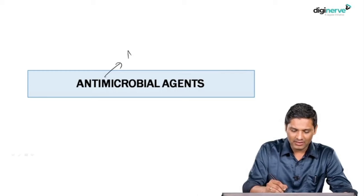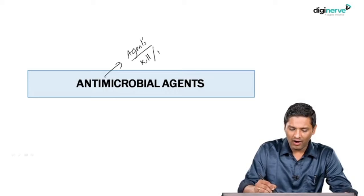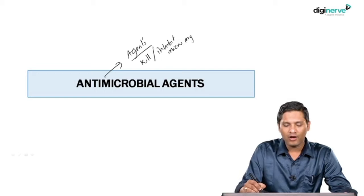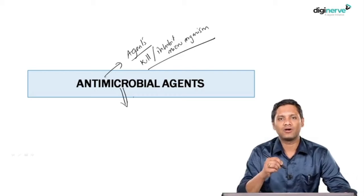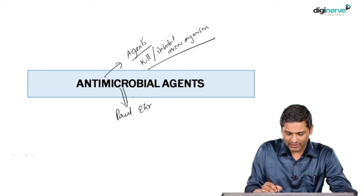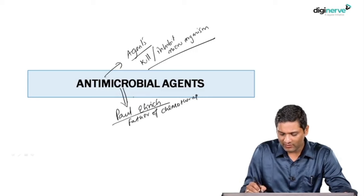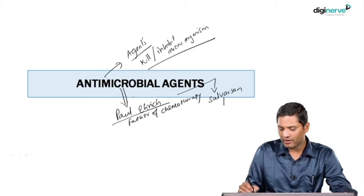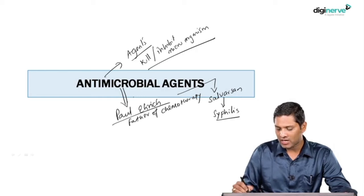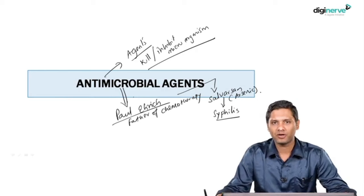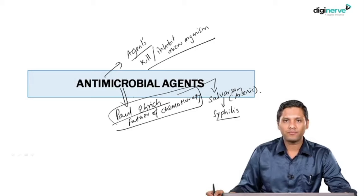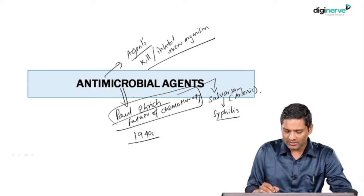Antimicrobial agents are agents that are used either to kill or inhibit microorganisms. The concept of antimicrobial agents has existed since ancient times. Paul Ehrlich was a scientist known as the father of chemotherapy. He introduced a molecule known as Salvarsan, which he used for treatment of a sexually transmitted disease known as syphilis. Salvarsan was an arsenic compound used for the treatment of syphilis.